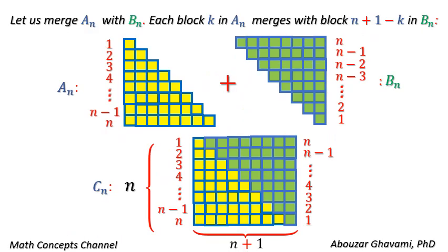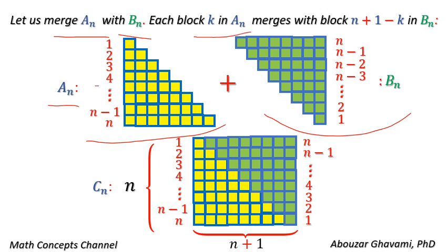Let us merge block set An with block set Bn. Each block k in An merges with block n plus 1 minus k in Bn. The resulting shape, called Cn, is a rectangle with height of n units and width of n plus 1 units.